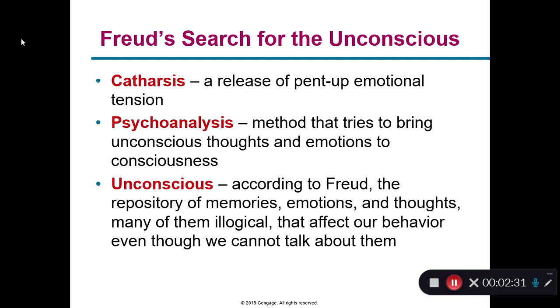Freud used psychoanalysis to search out what was happening in the unconscious, and then he would treat patients using talk therapy, bringing this material to the surface. For Freud, figuring out who you were and understanding your anxiety meant understanding your deeper, darker unconscious self — the unknown, the things we can't really access. What is really happening in our unconscious mind, and how is that influencing our conscious mind, which is then influencing how we behave and think in the social context?